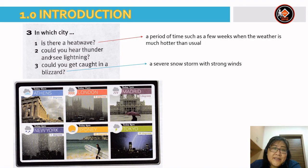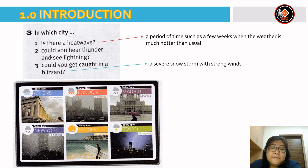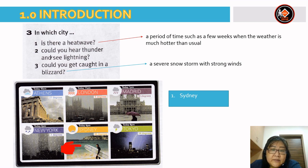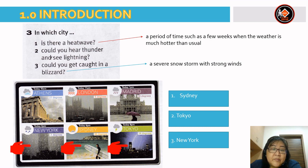Now let's answer some questions. Exercise 3: in which city is there a heat wave? A heat wave is a period of time, such as a few weeks, when the weather is much hotter than usual. The answer is Sydney. Number two: in which city could you hear thunder and see lightning? The answer is Tokyo. And the last one: in which city could you get caught in a blizzard? The answer is New York. A blizzard is a severe snowstorm with strong winds.